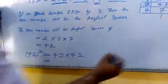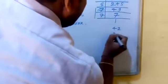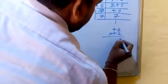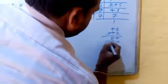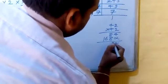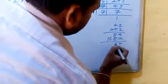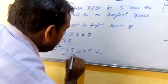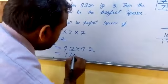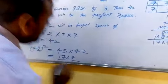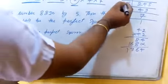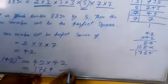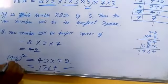Yahan par hum calculation kar sakte hain: 42 multiply 42. 2×4=8, 2×4=8 — 4×8 aur 4×16, so 4, 16, carry 1, 7. So the new number, the perfect square, will be 1764. Yeh tha perfect square number, by dividing the given number by 5.